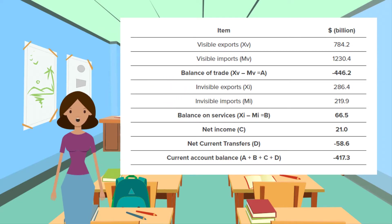The current account also includes income received or paid for the use of factors of production: land, labour, and capital. Income debits or outflows include wages paid to overseas residents working in the UK, and interest, profits, and dividends paid out to overseas residents and firms who have invested in the UK.